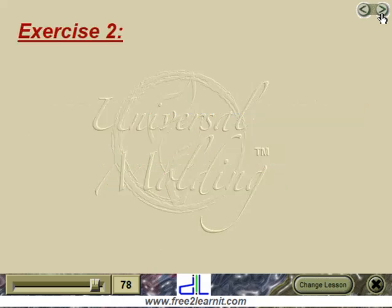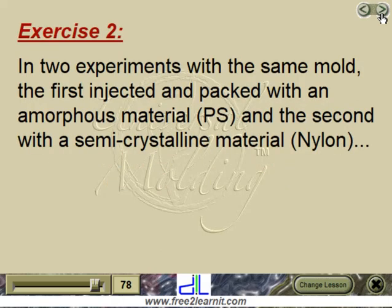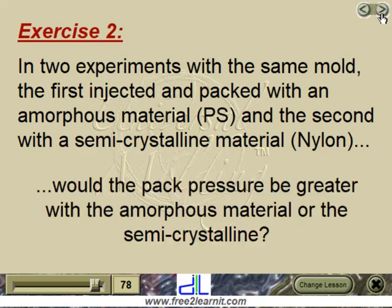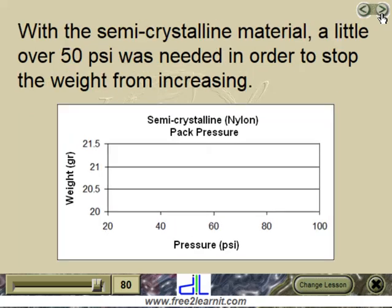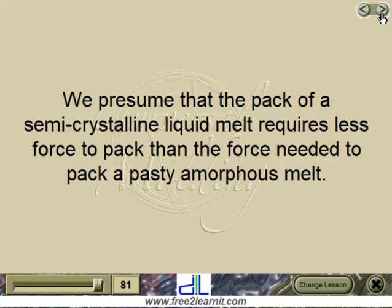Exercise 2: in two experiments with the same mold — the first with an amorphous material (polystyrene) and the second with a semicrystalline material (nylon) — would the pack pressure be greater with the amorphous or the semicrystalline? The graph shows that the amorphous material required more pack pressure — over 155 psi — for the part weight to stop increasing. With the semicrystalline material, a little over 50 psi was needed. It is presumed that packing a semicrystalline liquid melt requires less force than packing a paste amorphous melt.